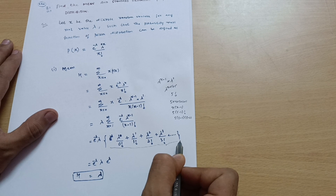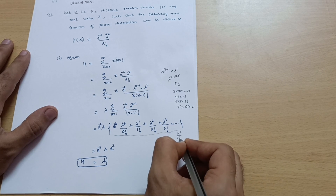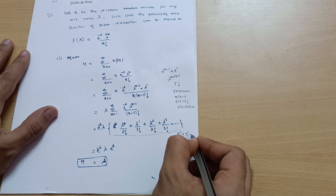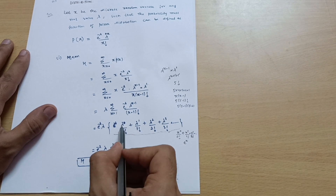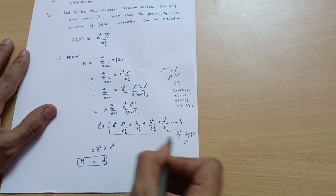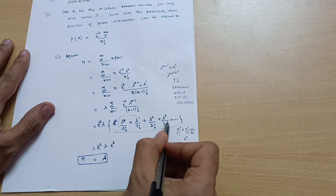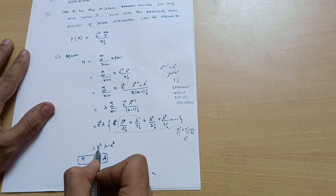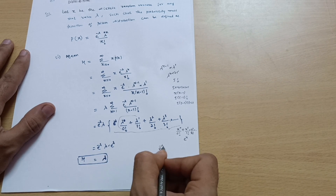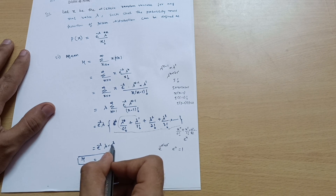This is the McLaurin series. The McLaurin series is: x^0/0! + x^1/1! + x^2/2! + ... = e^x. Here, instead of x we have λ, so the series equals e^λ. Therefore the mean becomes: e^(−λ) · λ · e^λ = λ · e^(−λ+λ) = λ · e^0 = λ · 1 = λ. So the mean of Poisson's distribution is λ.